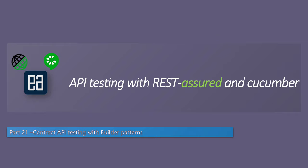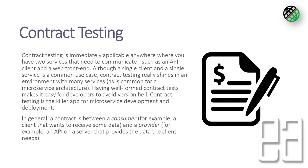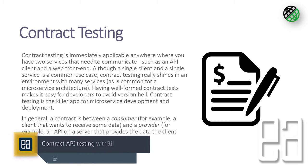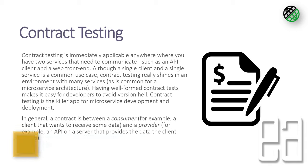Before talking about the builder pattern itself, we are going to talk about contract testing. I have discussed contract testing a lot in our EA weekly video series on YouTube, so you can go watch that. Contract testing is immediately applicable anywhere where you have two services that need to communicate — an API client and a web front-end. Although a single service is a common use case, contract testing really shines in an environment with many services.